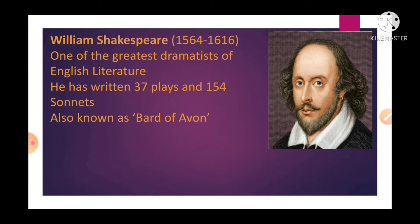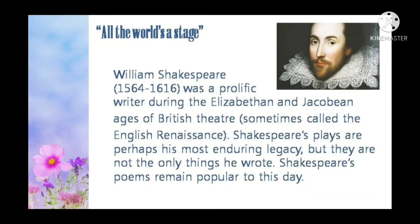He wrote 37 plays and 154 sonnets, and he was known as the Bard of Avon. William Shakespeare was a prolific writer during the Elizabethan and the Jacobean ages of British theatre, sometimes called the English Renaissance. The Elizabethan age was between 1558 to 1603 and the Jacobean age was 1603.